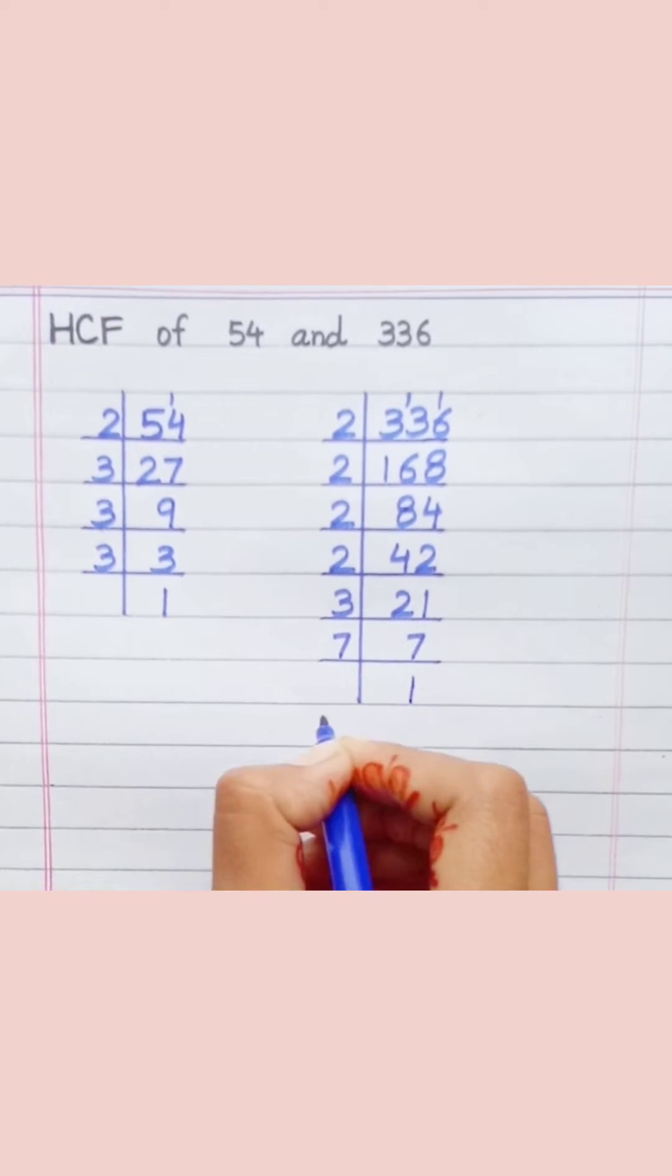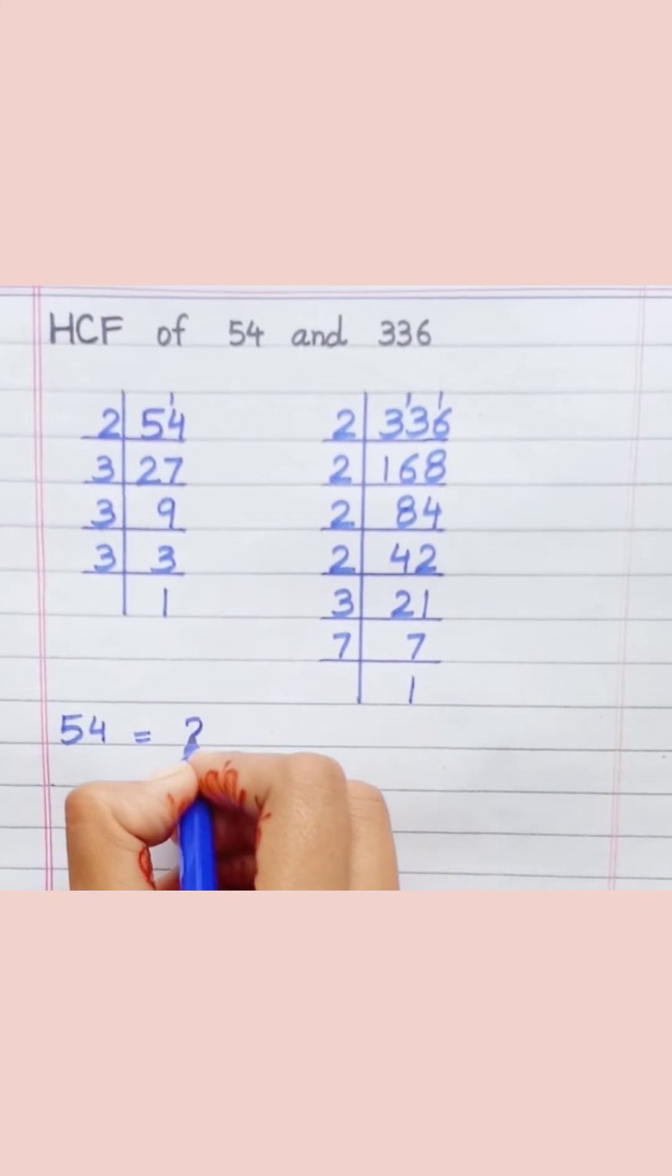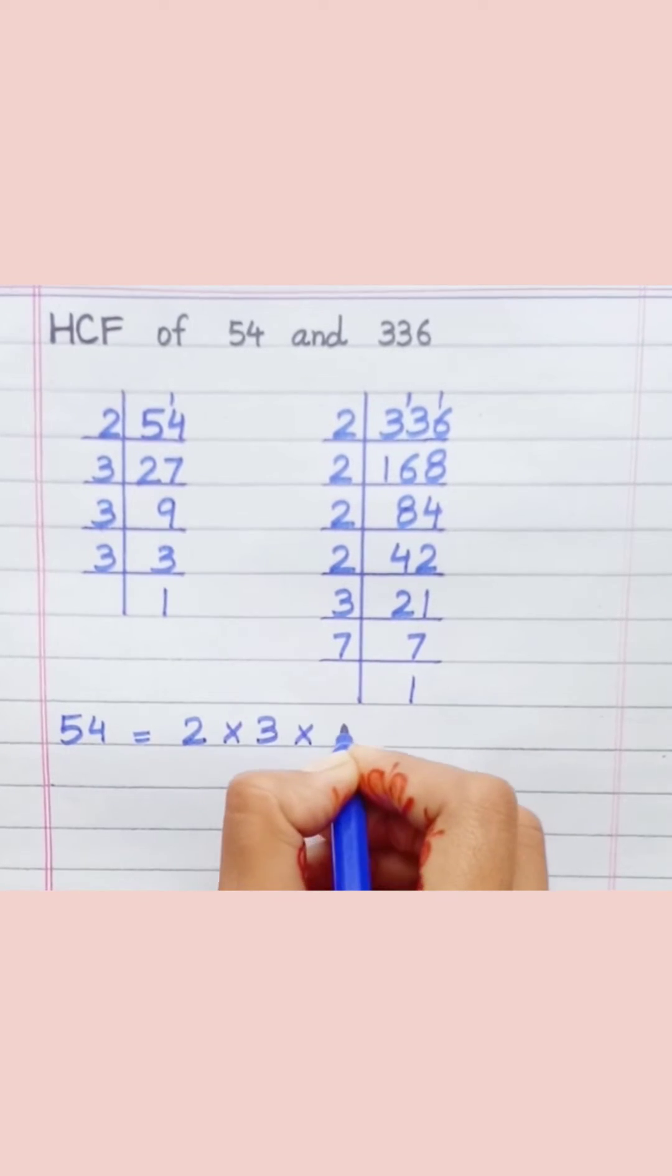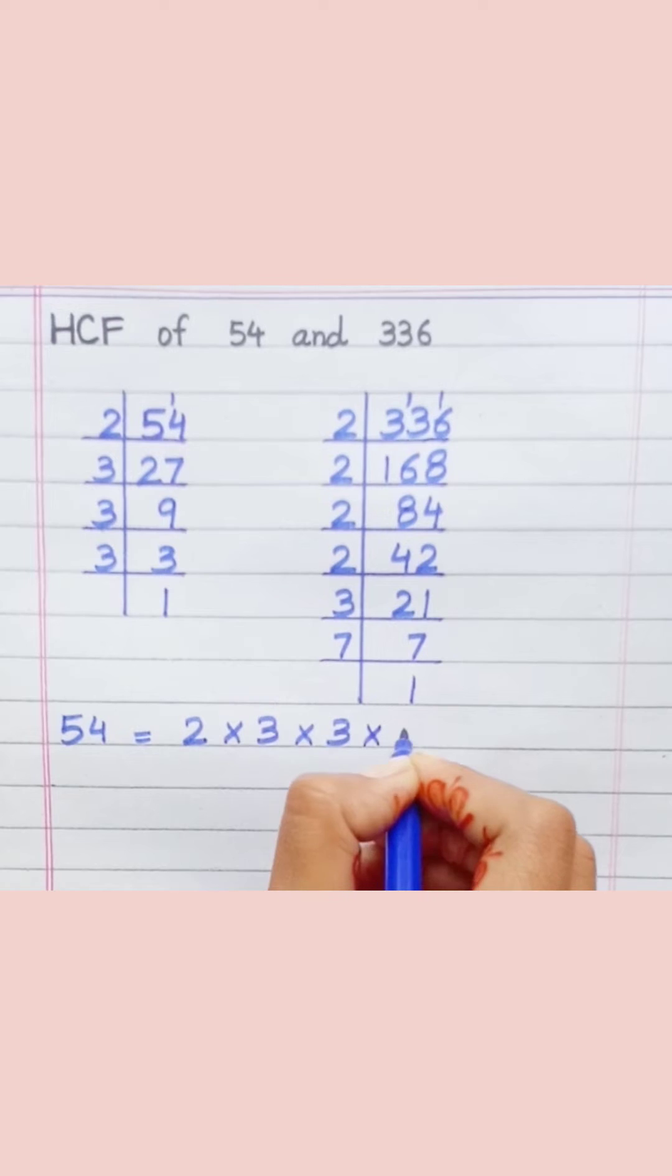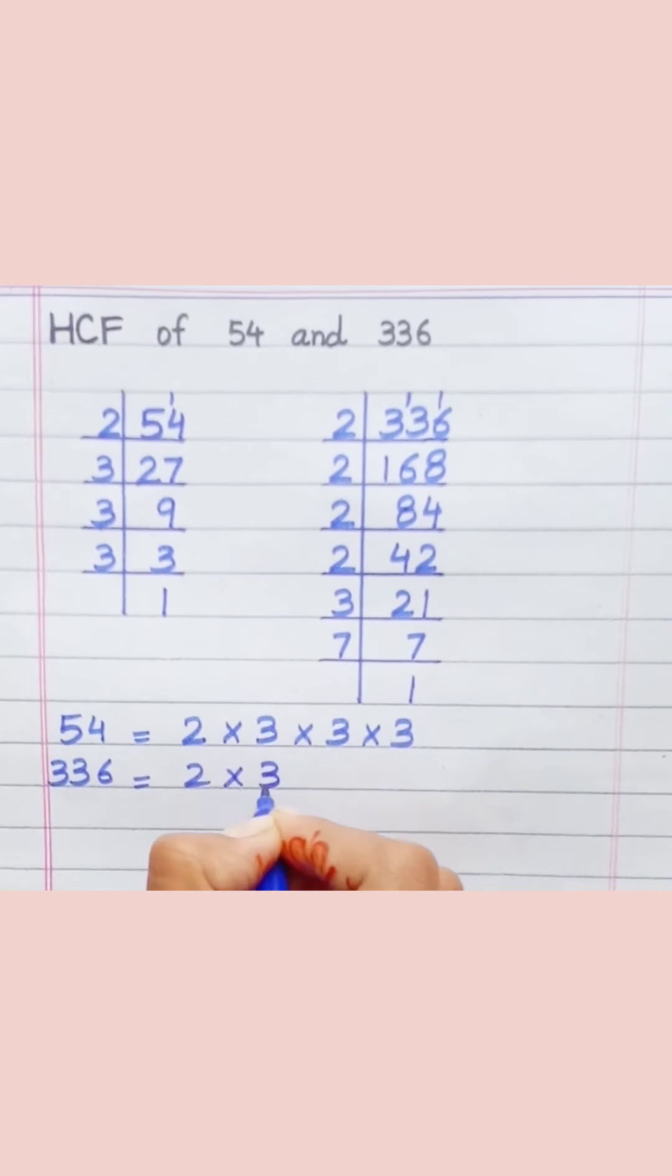7 times 1 is 7. 54 equals 2 times 3 times 3 times 3. 336 equals 2 times 2 times 2 times 2 times 2 times 7.